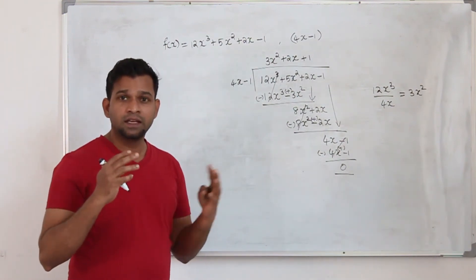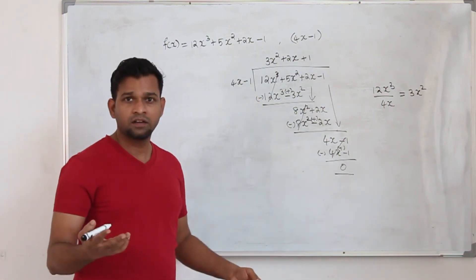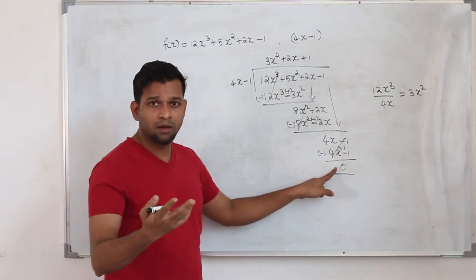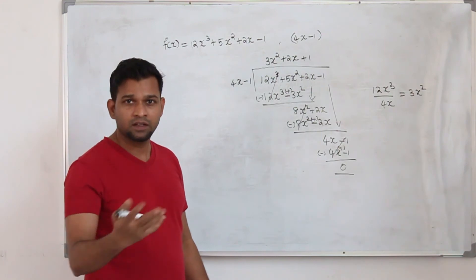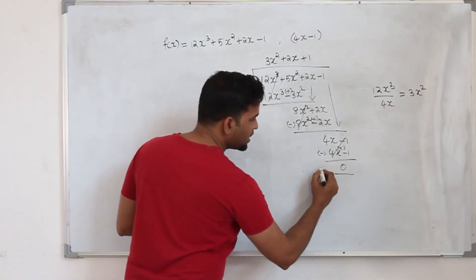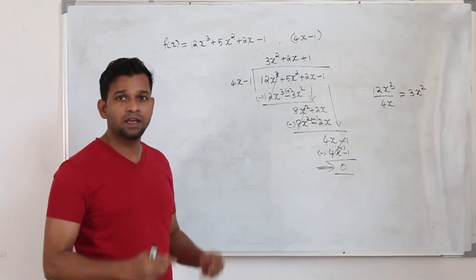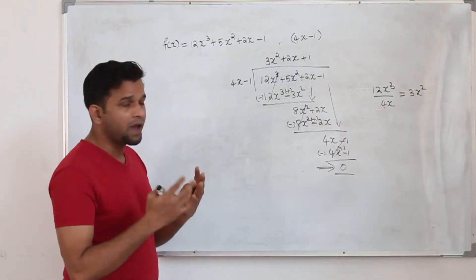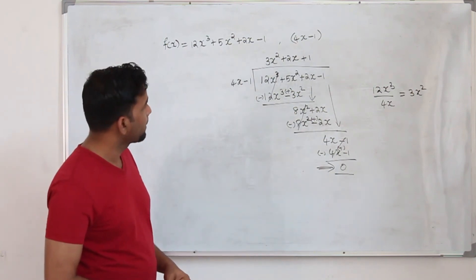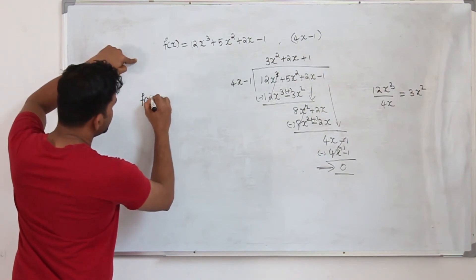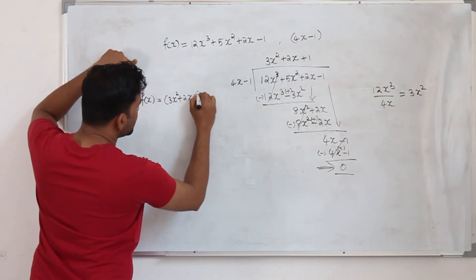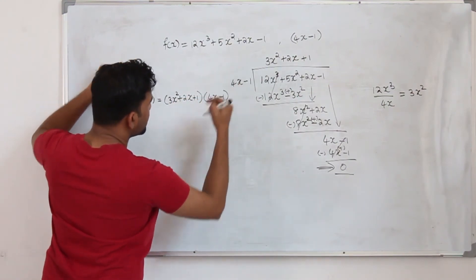When the remainder is 0, 4x−1 is called a factor of f(x). Note: when they say 'show that it's a factor,' your remainder must be 0 — you are proving it's a factor. When they say 'verify,' it could be 0 or some other number. So you can write f(x) as the quotient (3x²+2x+1) times the divisor (4x−1).